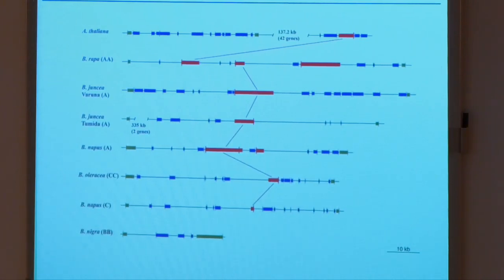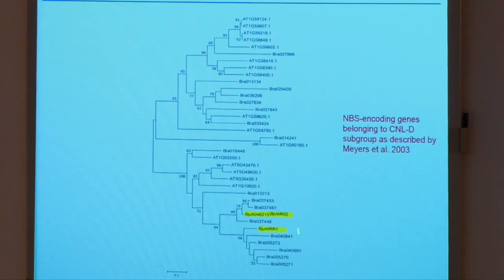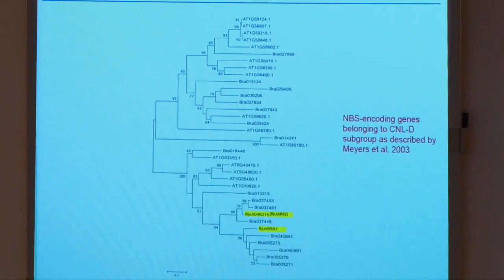This gives us a repertoire of CC-NBS-LRR orthologues which can now be tested for functionality and spectrum of resistance, and if broad enough, these can be introduced into the Indian germplasm to bring about resistance. Interestingly, when comparing different CC-NBS kind of genes from Arabidopsis and Brassica juncea, WRR1 and WRR2 are phylogenetically very similar to each other. Other genes of Arabidopsis that lie in the same clade are also imparting resistance — specifically to another oomycete which causes downy mildew. So we are pretty excited about these genes.